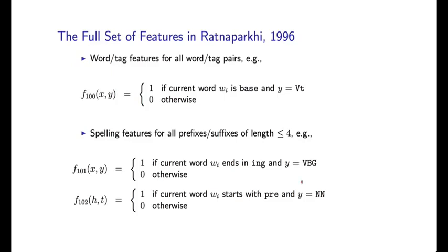We can essentially describe the full set of feature types used in Ratnaparkhi's tagger. He used features looking at the word and tag pair, exactly as shown. He used spelling features considering all prefixes and suffixes up to length 4 in conjunction with tags — for example, conjoining 'ing' as a suffix with VBG, or a feature that is 1 if the current word starts with the three-letter prefix 'pre' and the tag is NN. These are just two features of a very large number looking at all prefixes and suffixes seen in training data with all possible tags.